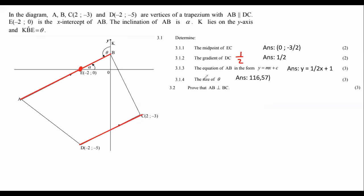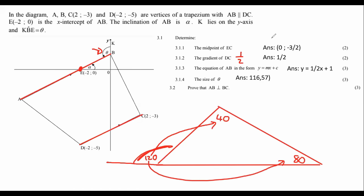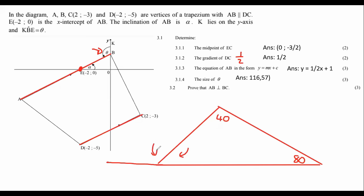The next question asks for the size of theta — that angle on the diagram. I want to talk about something. You know that if you have a triangle with interior angles of 40 and 80, the exterior angle will always be 120 — the sum of the two interior angles. A lot of you prefer to calculate the interior angle first and then use angles on a straight line.